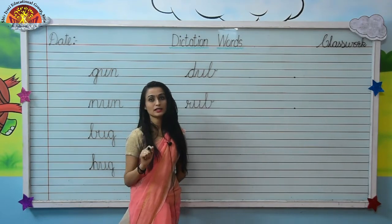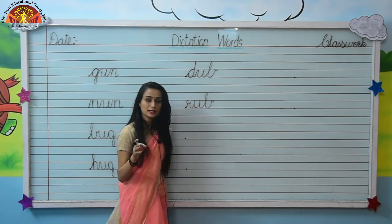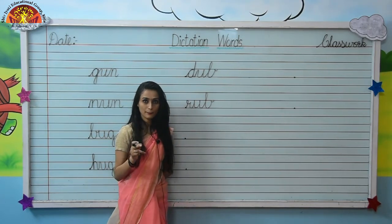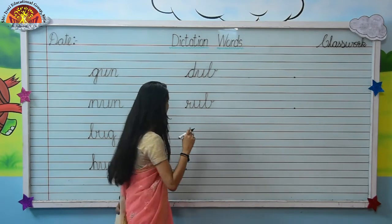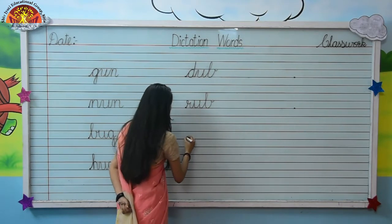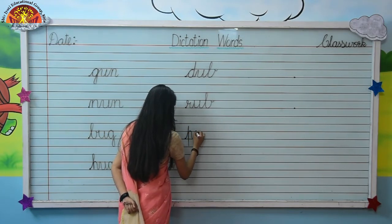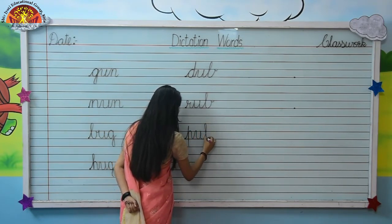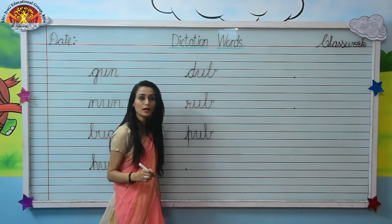Your next word is pub. P-U-B, pub. P-U-B, pub. So write: P-U-B, pub.